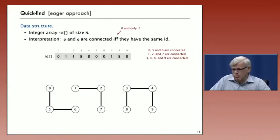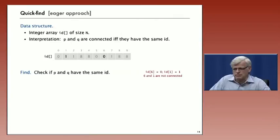Clearly that's going to support a quick implementation of the find operation. We just check the array entries to see if they're equal. Check if P and Q have the same ID. So 6 and 1 have different IDs—1 has ID 1, 6 has ID 0. They're not in the same connected component.